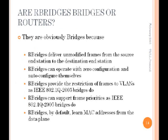So are these things really bridges or really routers? Here are five reasons why R-Bridges are clearly bridges: they deliver the unmodified frame; they can auto-configure just the way bridges can; if you want VLANs or priorities you have to configure those, and they support VLANs and priorities the same way as 802.1Q bridges; and by default they learn MAC addresses — though they only have to learn them at the periphery, as transit R-Bridges don't have to learn them.